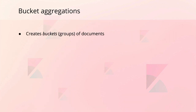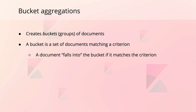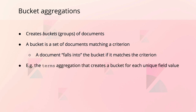First up, we have bucket aggregations, which create so-called buckets of documents. Buckets are sets of documents matching a given criterion. The criterion for each bucket therefore determines whether or not a given document falls into it. For instance, we could use an aggregation named terms, which takes the unique values for a field and creates a bucket for each of them.